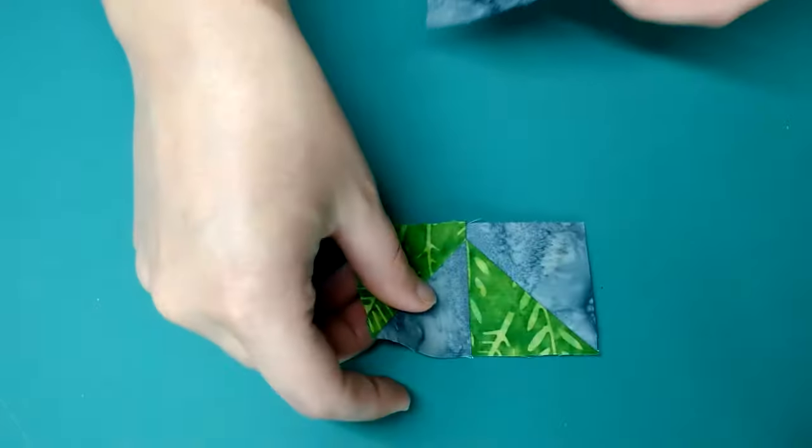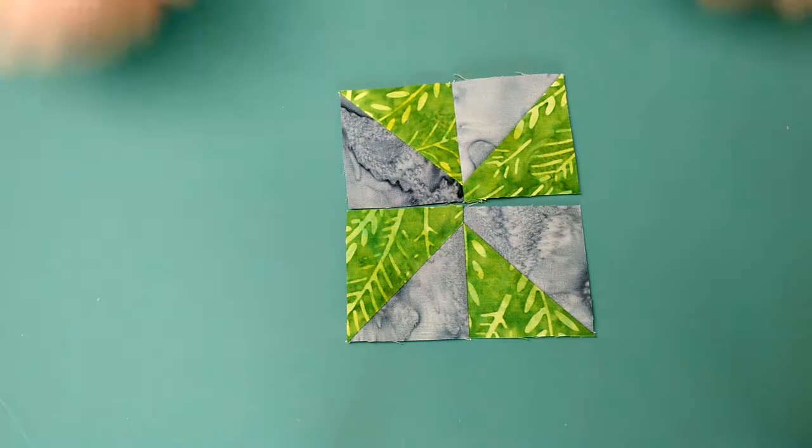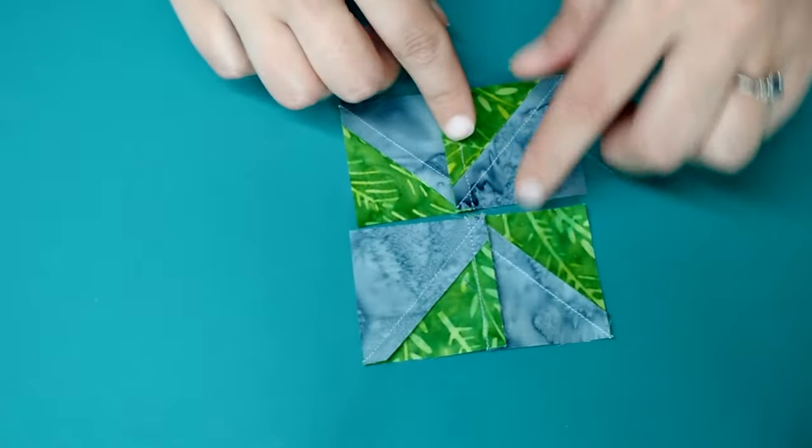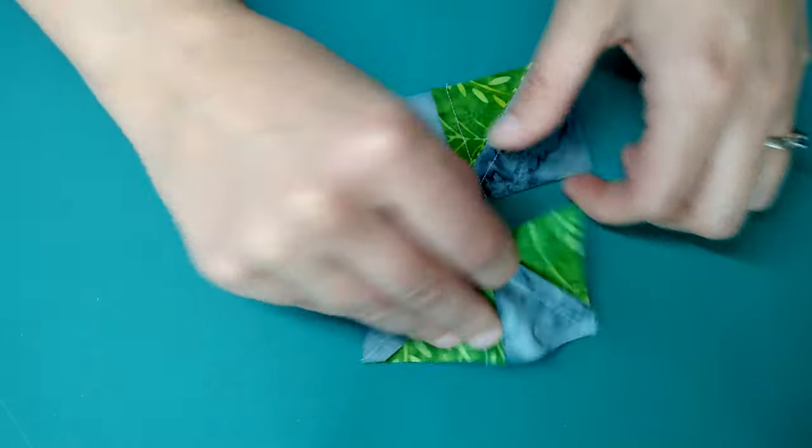Once those seams are sewn, I'm going to press them in opposite directions. So I end up with two pieces that look like this, and if I flip them over you can see that these seams are going opposite directions so that they'll nest together.